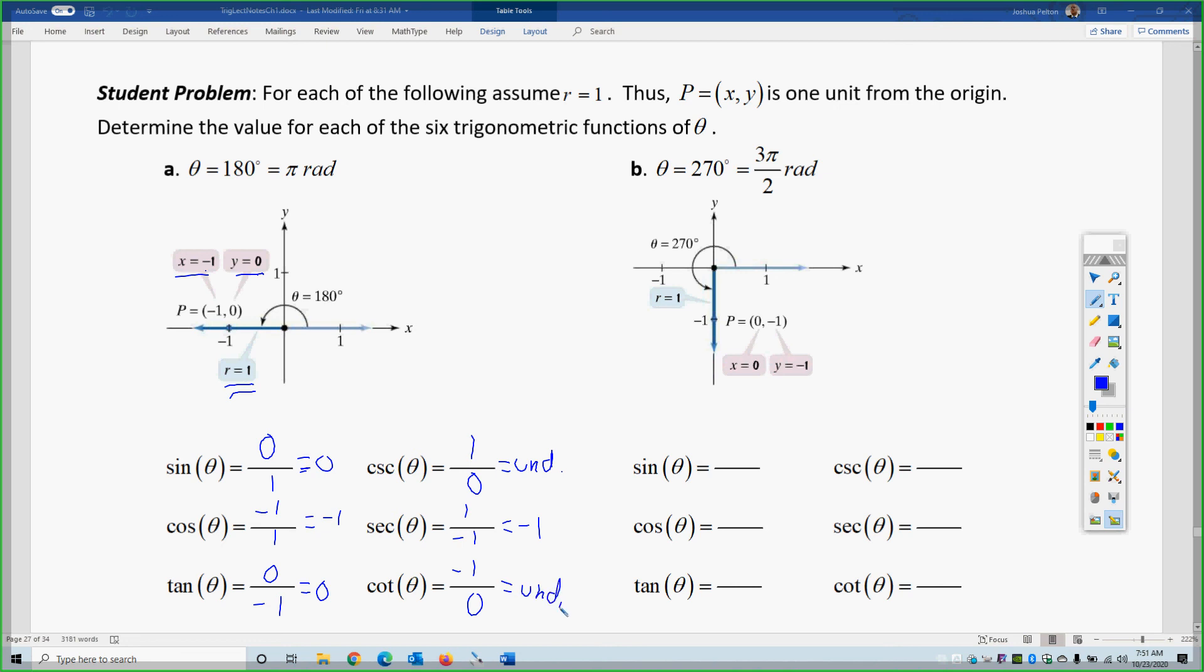Last one, 270 degrees. We have y over r, x over r, and then y over x. So, if we flip them, we have 1 over negative 1, 1 over 0, and 0 over negative 1. So, our final answers are negative 1, 0, undefined, 0, undefined, and negative 1.